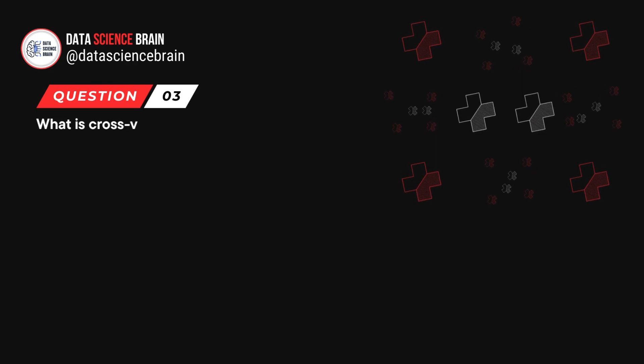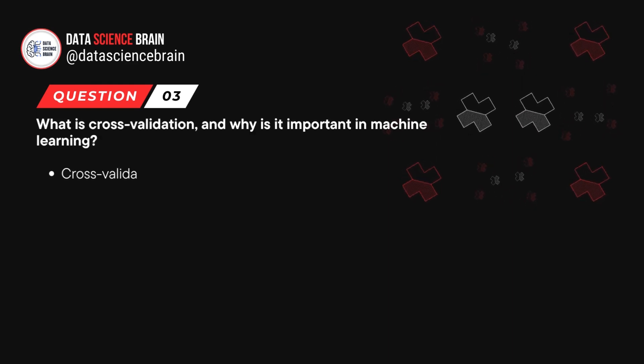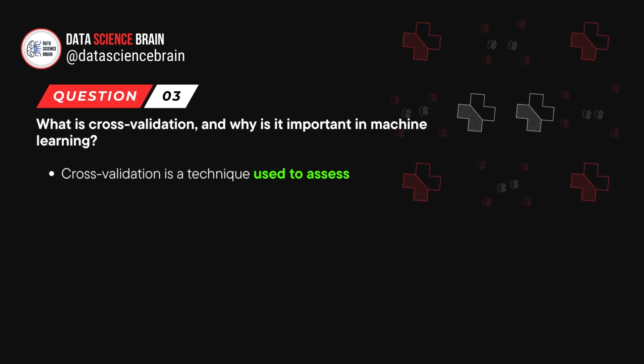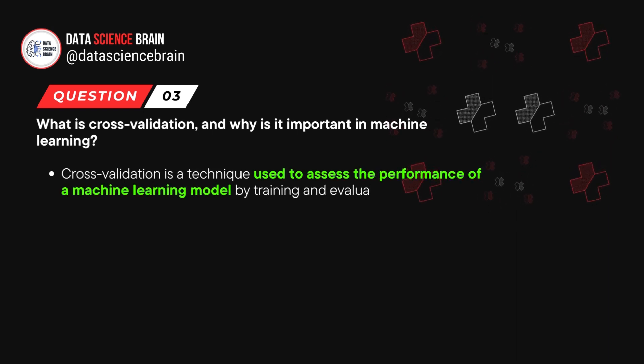Next question is, what is cross validation and why is it important in machine learning? Cross validation is a technique used to assess the performance of a machine learning model by training and evaluating it on multiple subsets of the dataset.